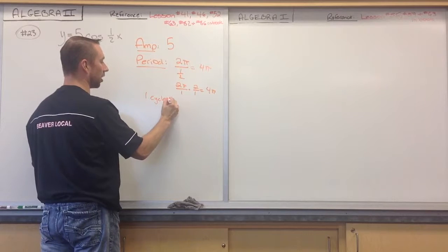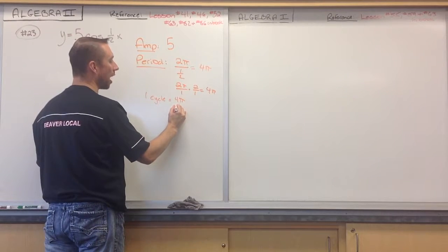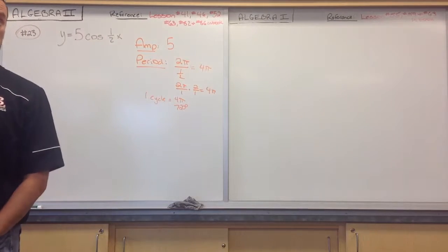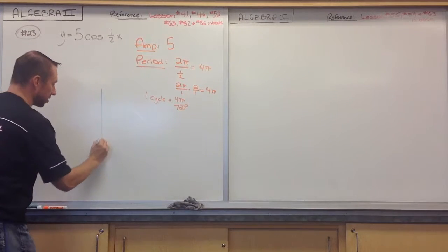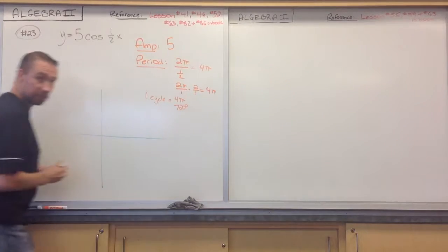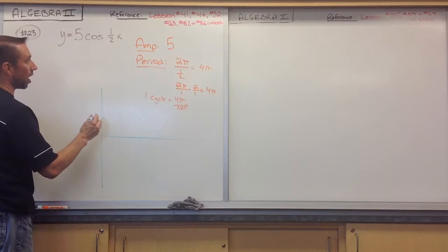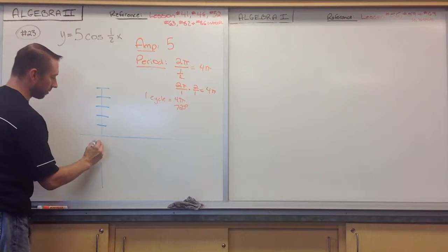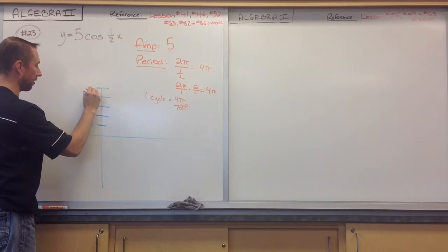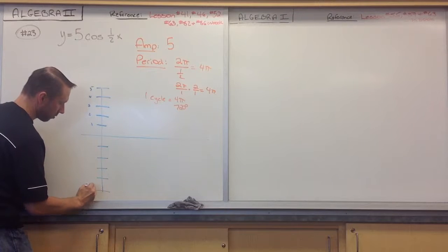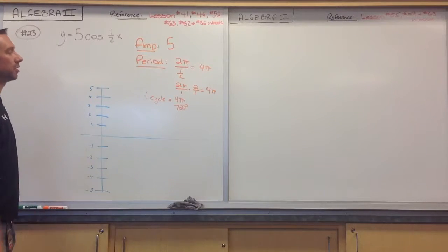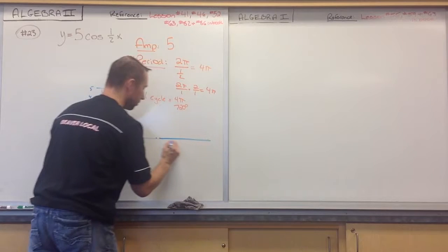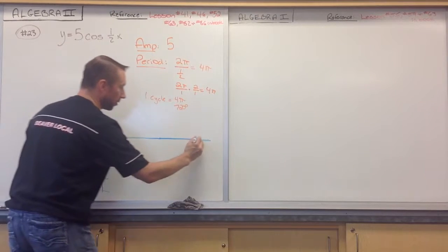One cycle will occur in 4 pi radians, or 720 degrees. So when we get our chart, it should match up to this at the end — otherwise we know we've done something wrong. My amplitude goes up to 5 and down to negative 5. The period is 4 pi, so I can put 4 pi at the end of the graph.